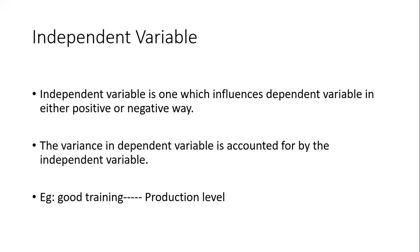Let us take the stress and job satisfaction example. Less stress leads to more job satisfaction — this is the hypothesis. Job satisfaction is the dependent variable which depends on stress. If stress increases, the level of job satisfaction goes down. So stress is negatively influencing job satisfaction — they are inversely proportional. Stress is the independent variable, and job satisfaction is the dependent variable.